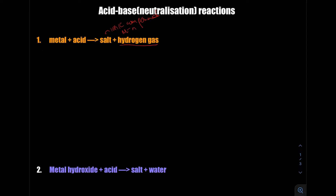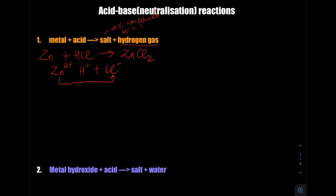Let's take an example. Let's take zinc as a metal reacting with hydrochloric acid. What would be the salt produced? Zinc is one of the transitional metals; it's going to have the 2+ charge. The acid is going to donate its proton — H⁺ — and the conjugate base of that acid is going to be Cl⁻. So this zinc will be attracted to that ion of the HCl, the conjugate base, and it will form ZnCl₂.